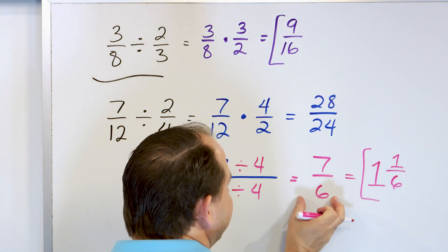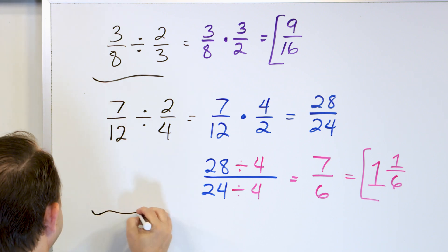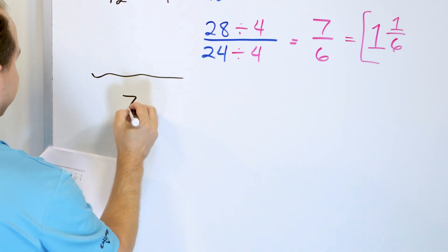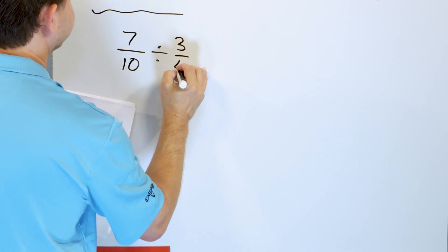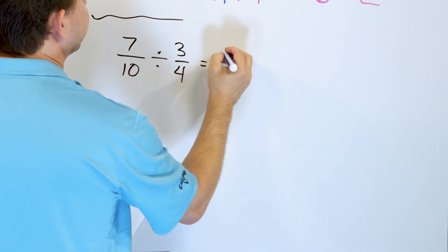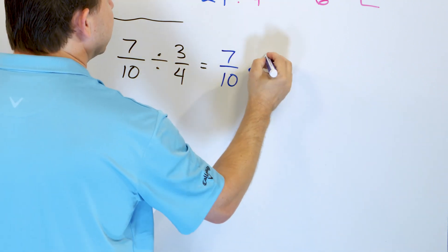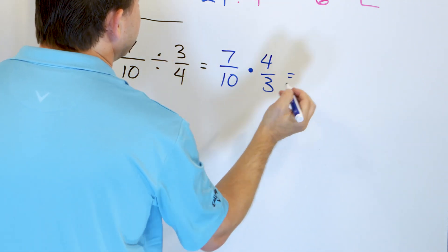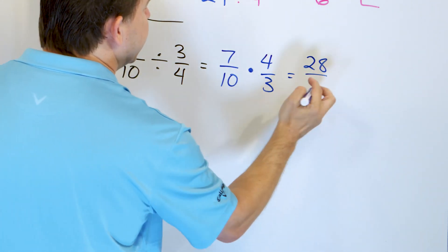That's probably the best way to write it. You could write the answer as 7/6 if you'd like. Making good progress. Let's take a look at 7/10. We'll divide it by 3/4. What do we do? Take the first fraction, 7/10. Leave it. Change into multiplication. Take this, flip it over to 4/3. 7 times 4 is 28. And 10 times 3 is 30.